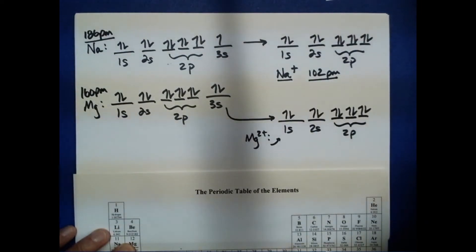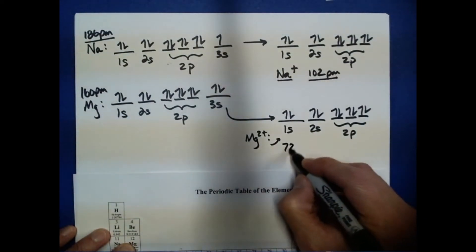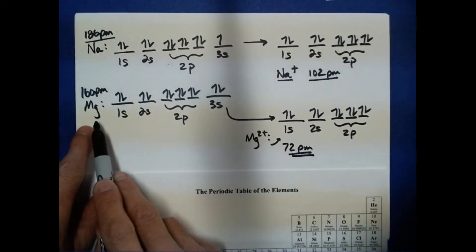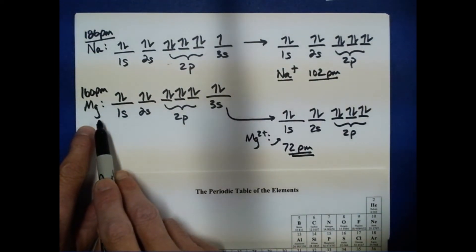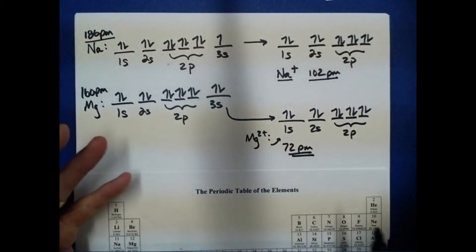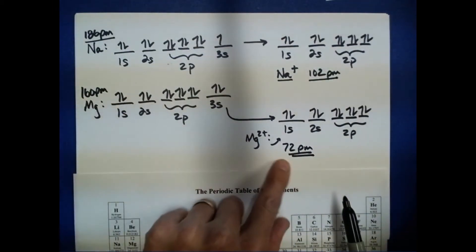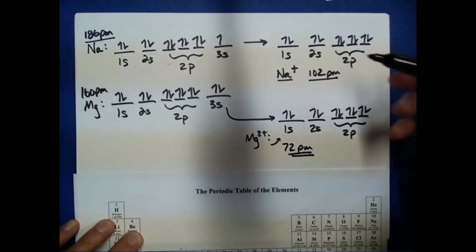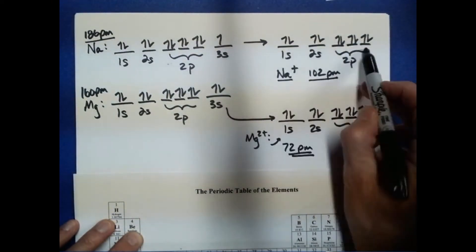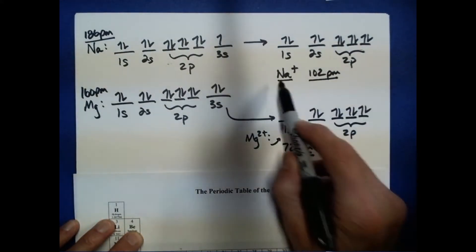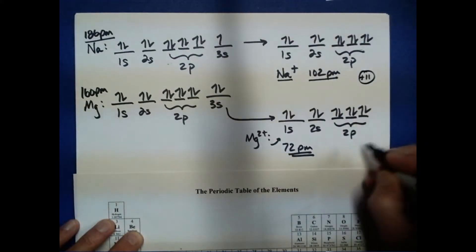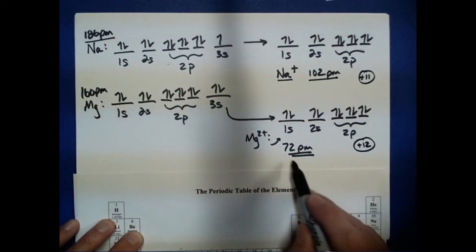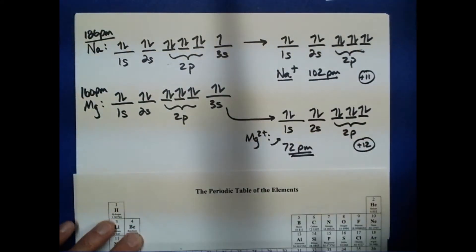Magnesium 2+ is 72 picometers, because it has a slightly larger effective nuclear charge — a plus-12 nucleus — pulling those electrons even tighter. Even though sodium 1+ and magnesium 2+ are isoelectronic, having the same electronic configuration, the plus-12 nucleus of magnesium causes a further contraction compared to the plus-11 nucleus of sodium.